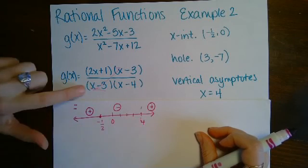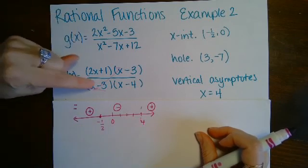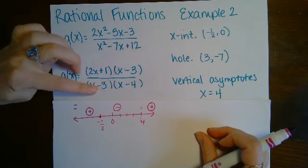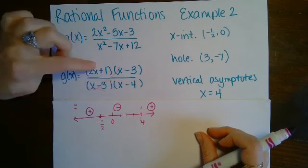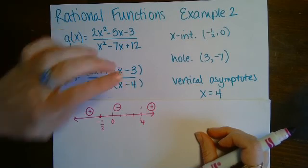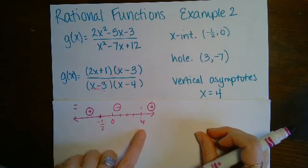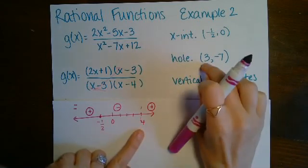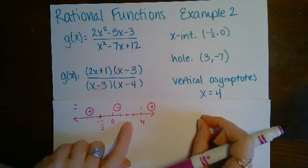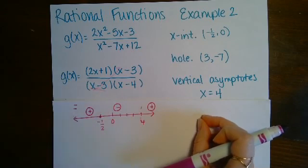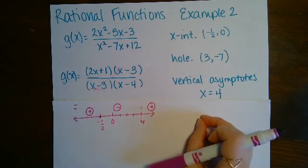Also, you don't have to plug the test value into factors that cancel to one — only plug into the remaining factors. And when picking a number between negative one-half and four, you can pick any value except three, since that's a hole and the function would be undefined there.